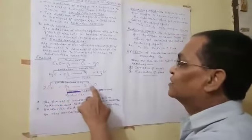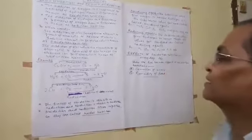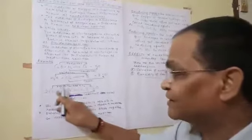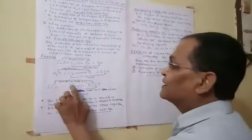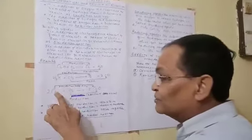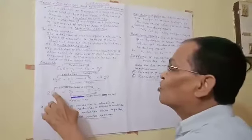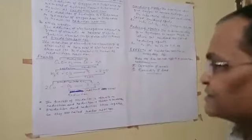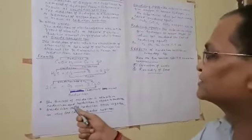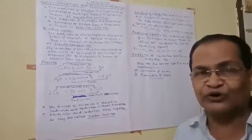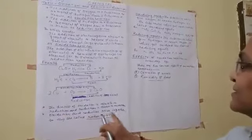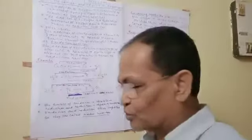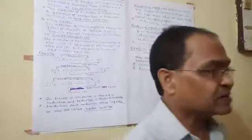Another example: when copper reacts with oxygen, copper oxide is formed. Here oxygen is added to copper metal, so addition of oxygen takes place. Since oxygen is electronegative, the conversion of copper metal into copper oxide is oxidation. We can say the process of oxidation is opposite to reduction, and these two processes are just opposite to each other. Oxidation and reduction occur together, so they are called redox reactions.